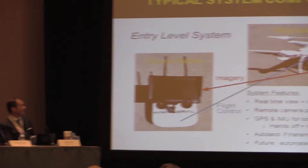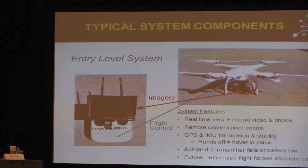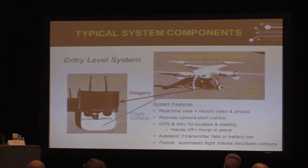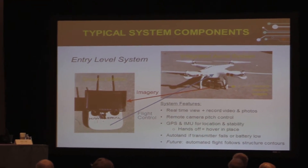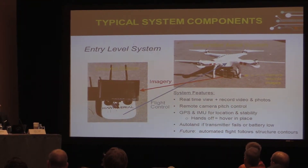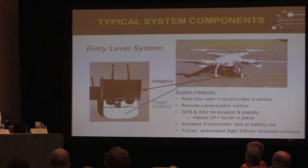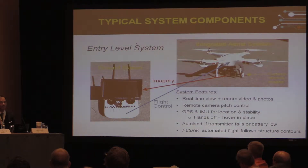These are the basic system features: real-time view, remote camera pitch control. These drones have a very sophisticated flight control system that makes them very stable. They have GPS, and even in wind, if you're flying it and get into some trouble, you can just let go of the controls and it'll just stop in the air. Even if the wind blows it, it'll correct itself and stay put. Very, very sophisticated flight control system.